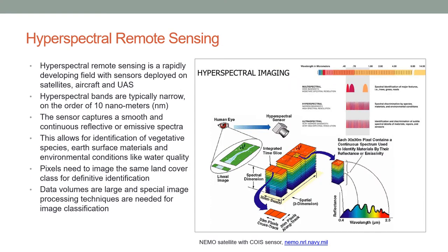We will also take a look at hyperspectral remote sensing, which is a rapidly developing field with sensors deployed on satellites, aircraft, and unmanned aerial systems. Hyperspectral bands are typically narrow — spectrally on the order of about 10 nanometers. The graphic on the right shows what hyperspectral remote sensing is all about: multispectral bandwidths are pretty wide, whereas hyperspectral bandwidths are substantially narrower. Ultra-spectral sensors, where spectral resolution gets even greater, are still in a very experimental stage.